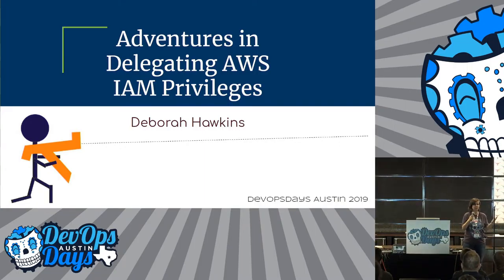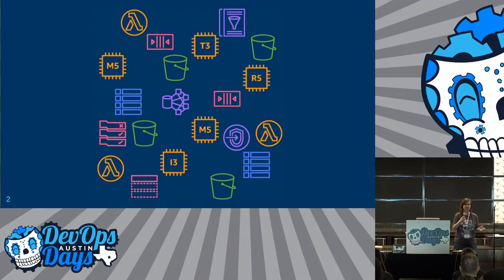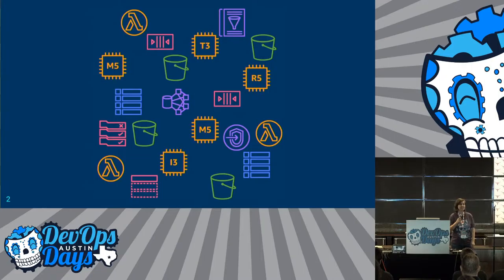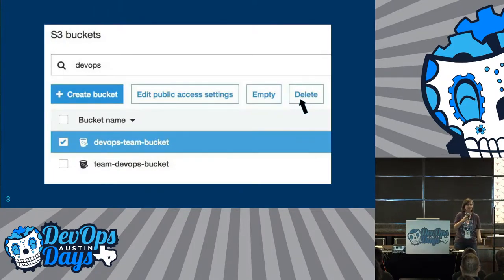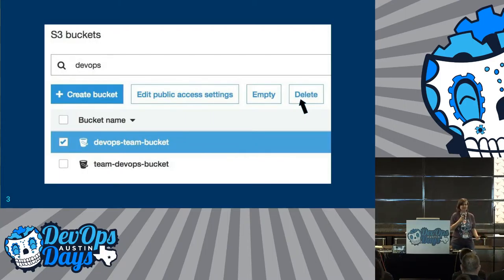Most people start with one account that all their dev teams might use. They'll create random resources in there — some compute instances, some Lambdas, some databases, whatever else they want. It's all just a big mixed batch of a bunch of different things. But sometimes they're named similarly, or maybe they just appear next to each other in the console. So bad things happen, things get deleted.